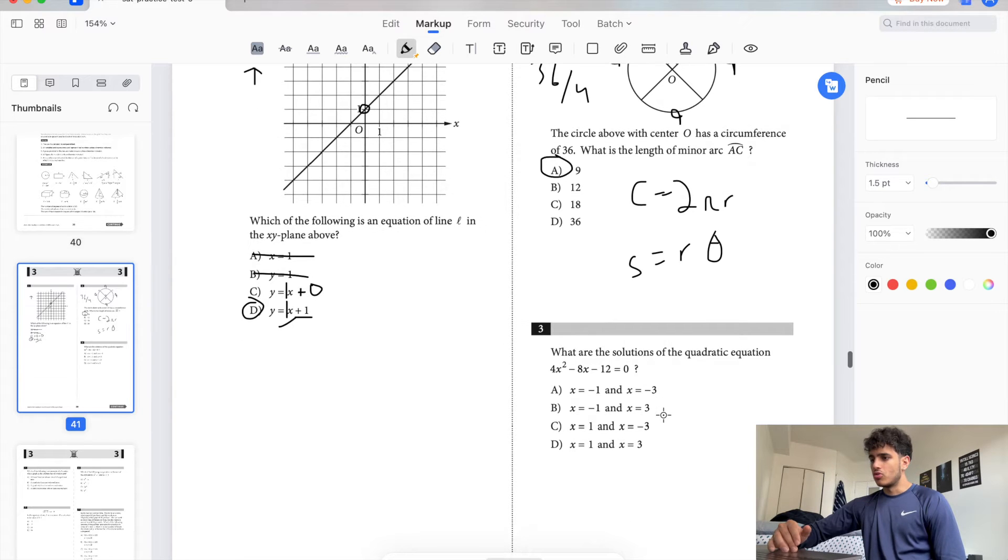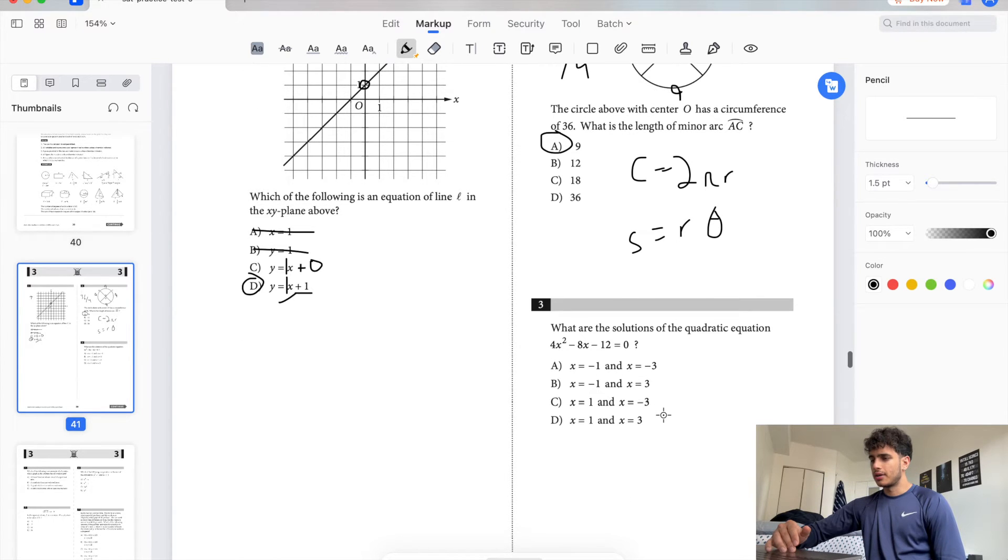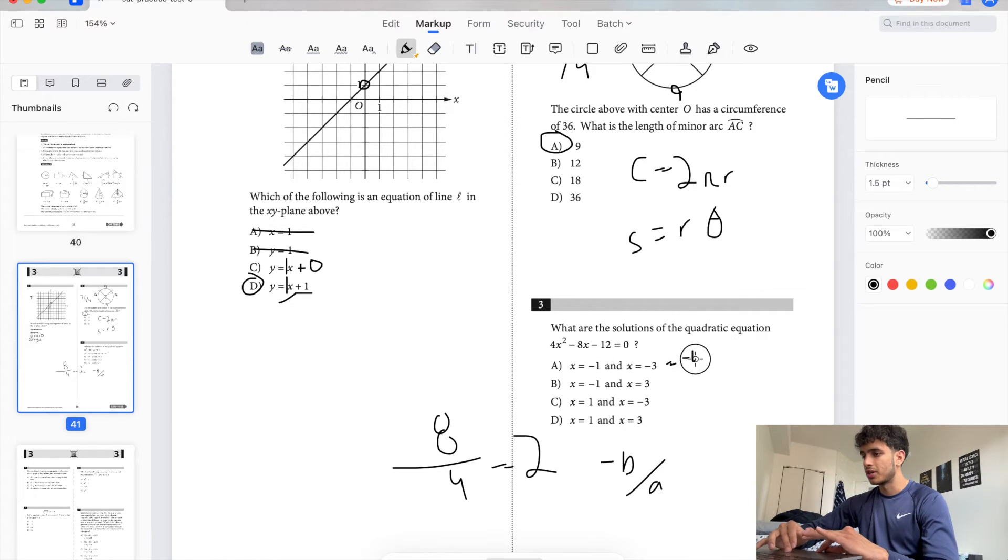What are the solutions of the quadratic equation? A quick way to just eliminate choices is do negative B over A. Negative B over A gives you the sum of the solutions. So that's 8 over 4, which is 2. So we got to make sure these choices add up to 2. Negative 1, negative 3 equals negative 4, so that's wrong. This equals 2. This equals negative 2. This equals 4. So only B works.